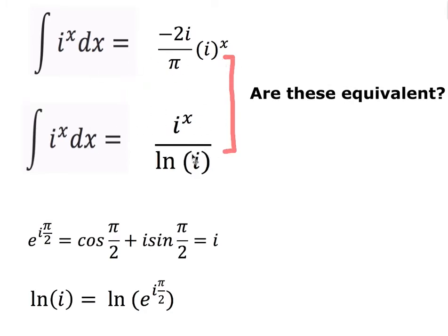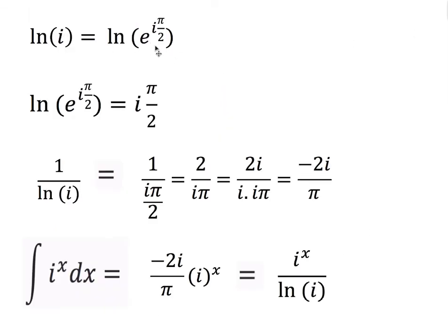Now my question is: is that the same as the conjectured rule? I want to know if these things are the same, so let's see. I'll use the result from before where i can be rewritten as cos(π/2) plus i sine(π/2), and also as e to the i π/2. Using this equivalence, I want to find ln(i). So ln(i) must be the same as ln(e to the i π/2), because those two things are the same. Using the fact that ln and e to the x are inverse functions — the ln and e cancel — what I'm left with is i π/2. So ln(i) equals i π/2.